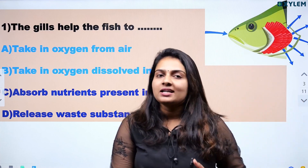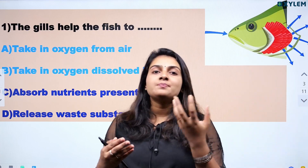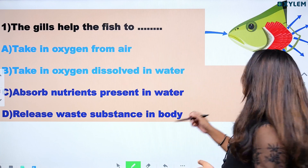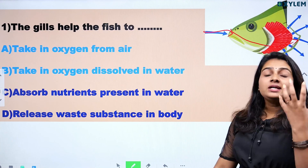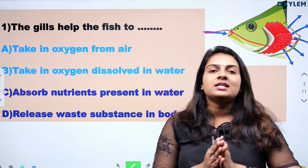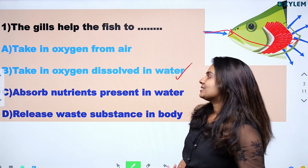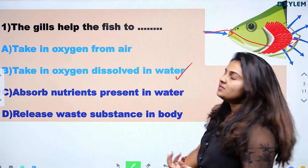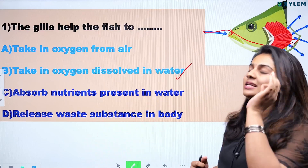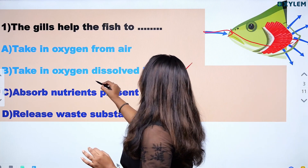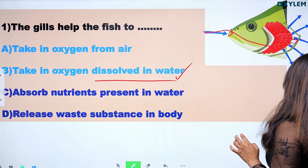The gills are the respiratory organs in the body. The fish get the oxygen dissolved in the water through their gills. So the correct answer is Option B: take in oxygen dissolved in water. So let's go to the next question.